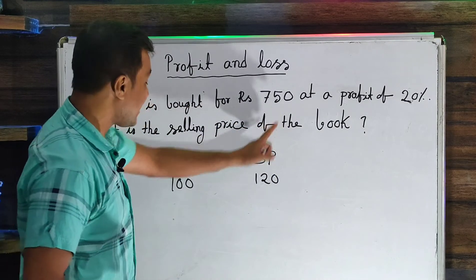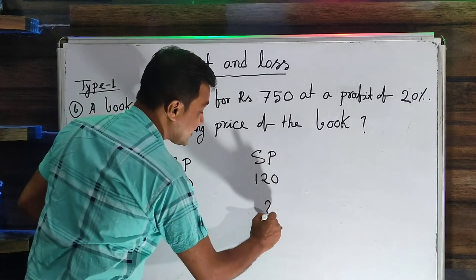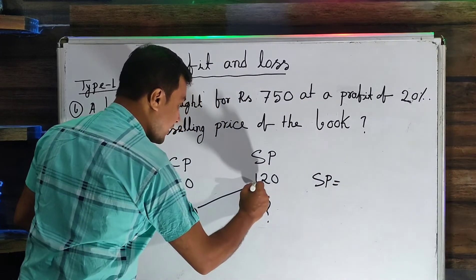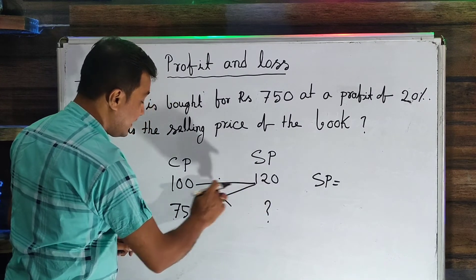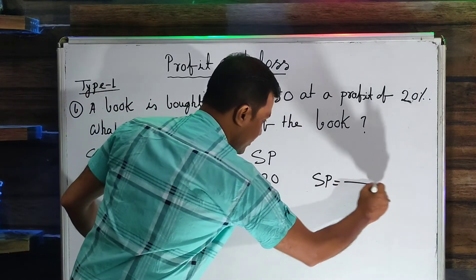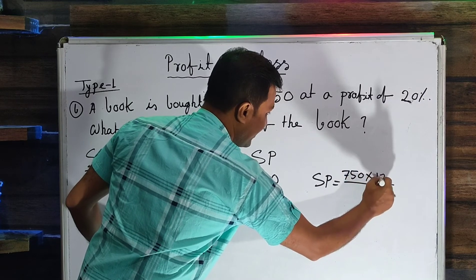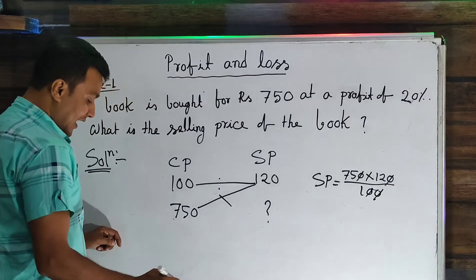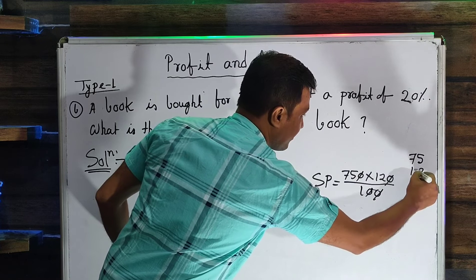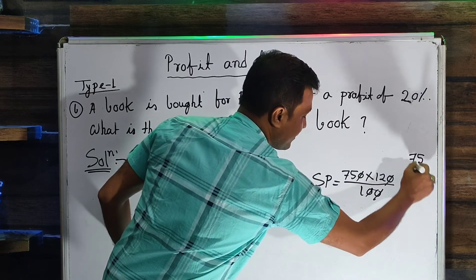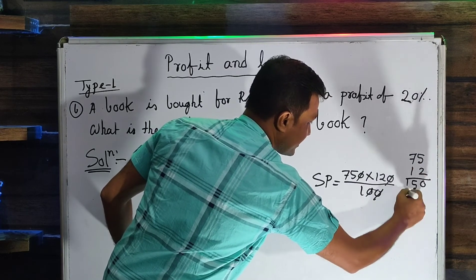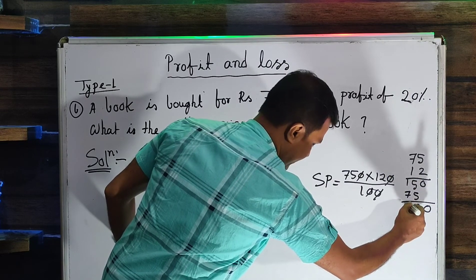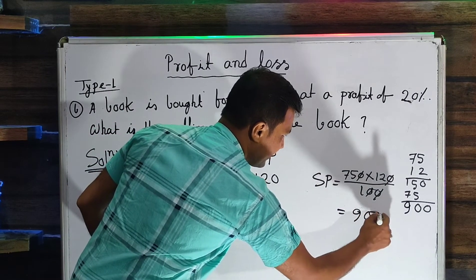So if you bought for 750 rupees and want 20% profit, when CP is 100, SP will be 120. So I will cross multiply and divide. 750 into 120 divided by 100 equals 900. The selling price will be 900 rupees.